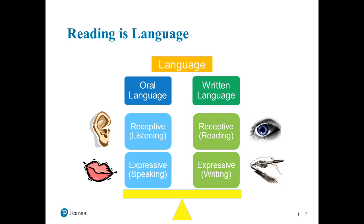If we think about the development of language — and for those speech pathologists on the line, I know this is a very rough estimation — essentially we develop language by ear, which is receptive oral language, listening first. We develop language by mouth, or expressive oral language, followed by the written language components: the receptive reading component (language by eye) and expressive written language, which is writing. So it occurs in this general fashion.